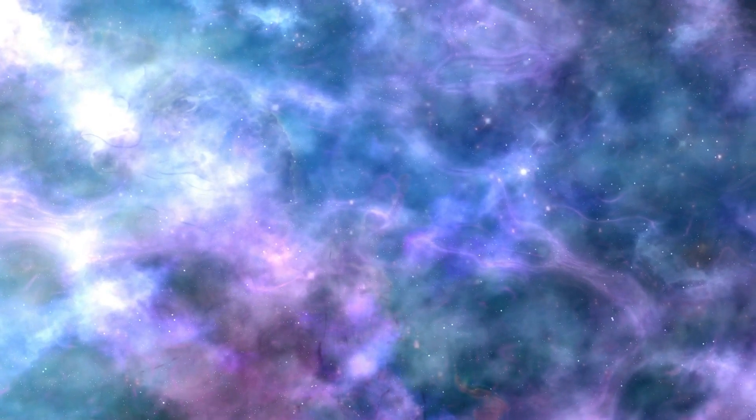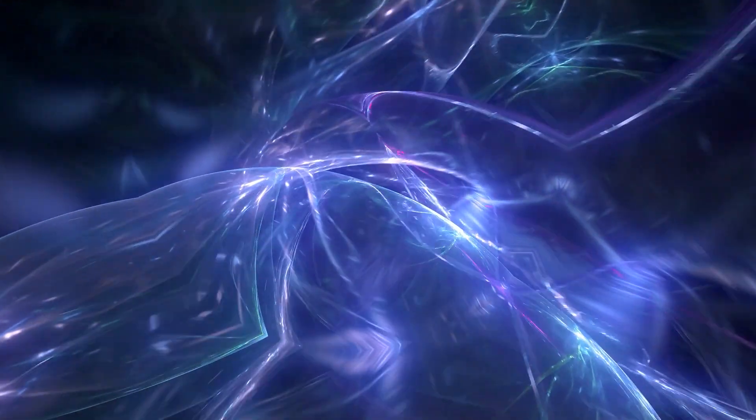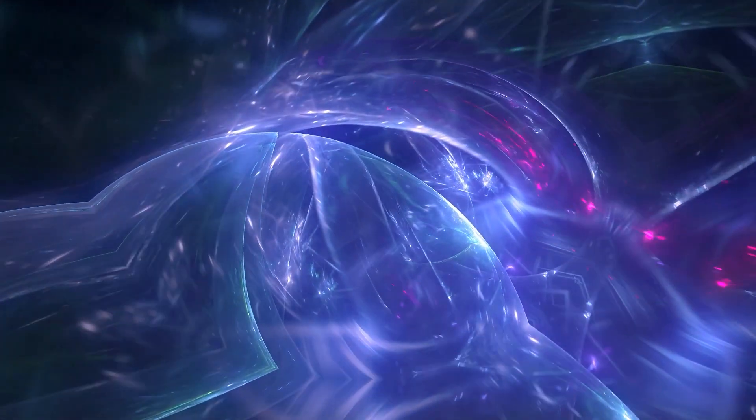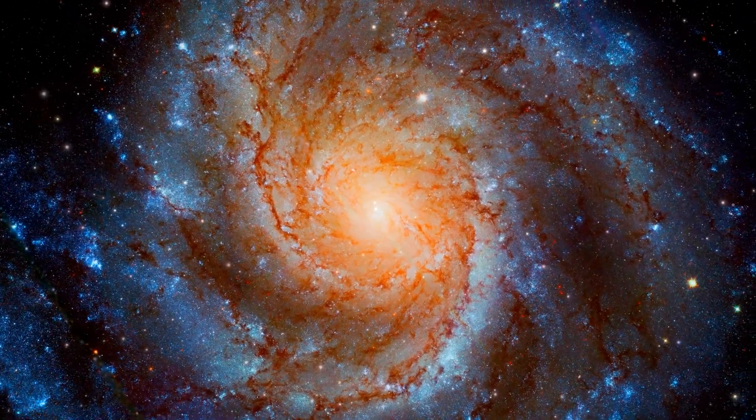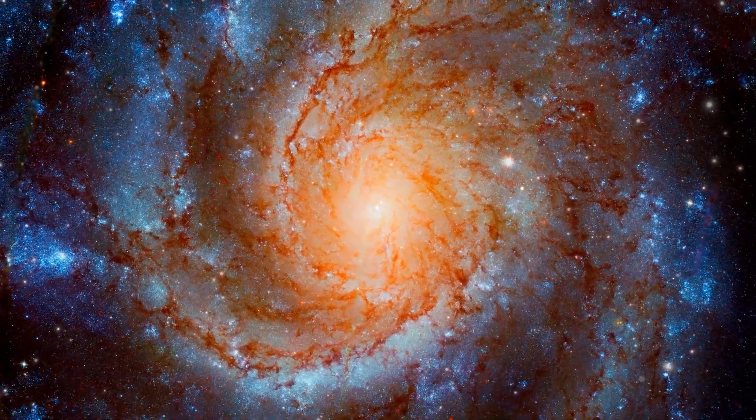Fuzzy dark matter brings a really new idea, saying dark matter is made of super light particles that move like waves in the big space picture. This thought tries to fix the mismatch between the small galaxy shapes we see and the ones our theories predict.